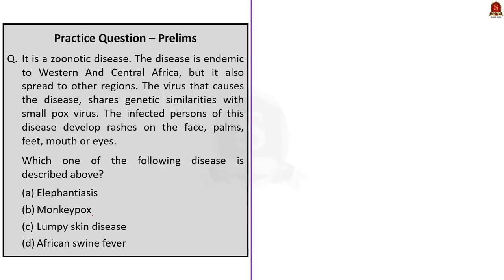The fourth question describes a disease: it is zoonotic, endemic to western and central Africa but has spread elsewhere, its virus shares genetic similarity with smallpox, and infected persons develop rashes on face, palms, feet, mouth and eyes. From our discussion, we know the correct answer is option B — monkeypox.